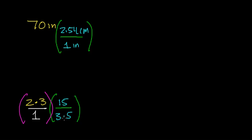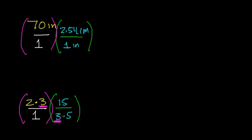Now let's look at how we rewrite the conversion factor side. We write 70 inches as 70 inches over 1 — expressing it as a fraction. We can put brackets around both problems to compare their similarities. Before multiplying further, we can cancel out like terms. There's a 3 in the numerator and a 3 in the denominator, so we can cancel those two 3s out.